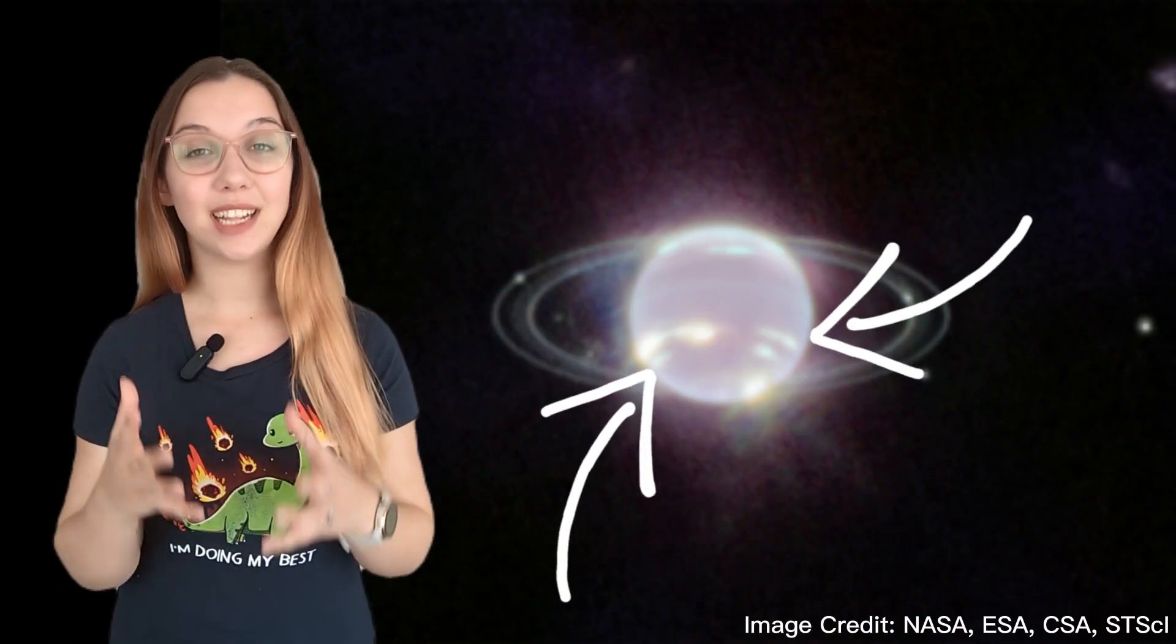Those brighter patches are clouds high in the atmosphere of Neptune. They reflect more sunlight before it gets absorbed by the methane, making it look brighter than the deeper atmosphere.